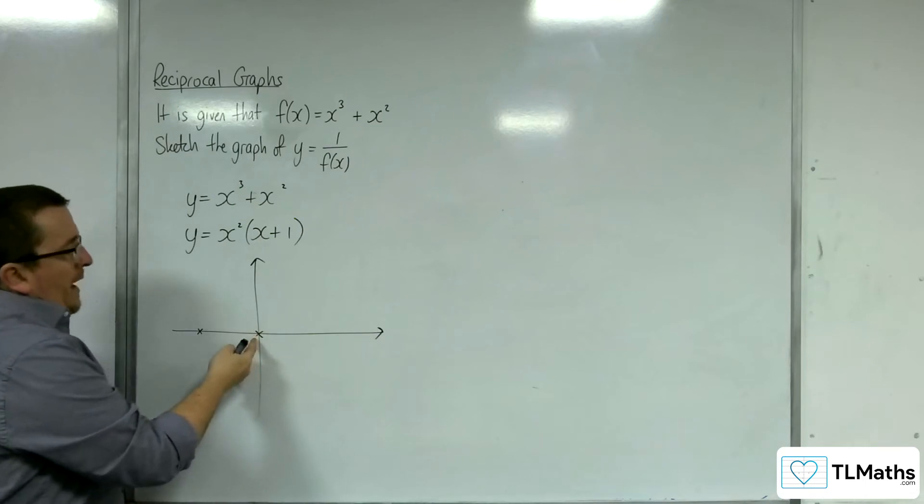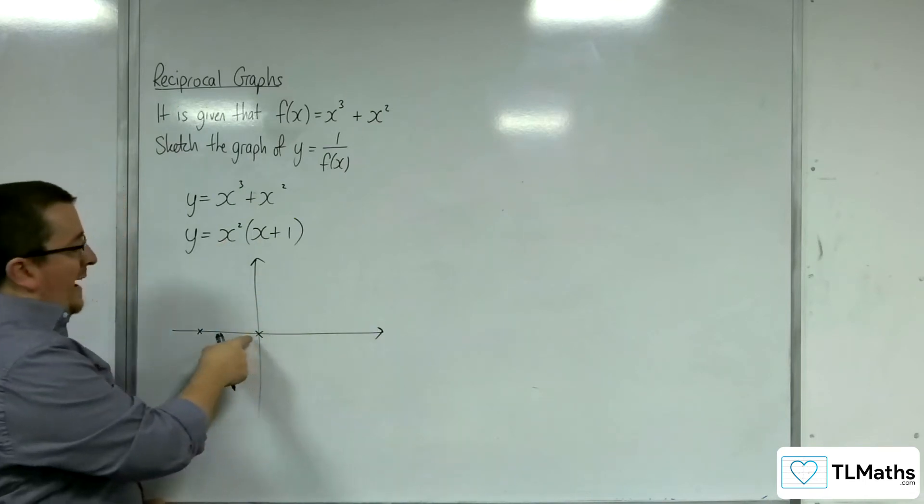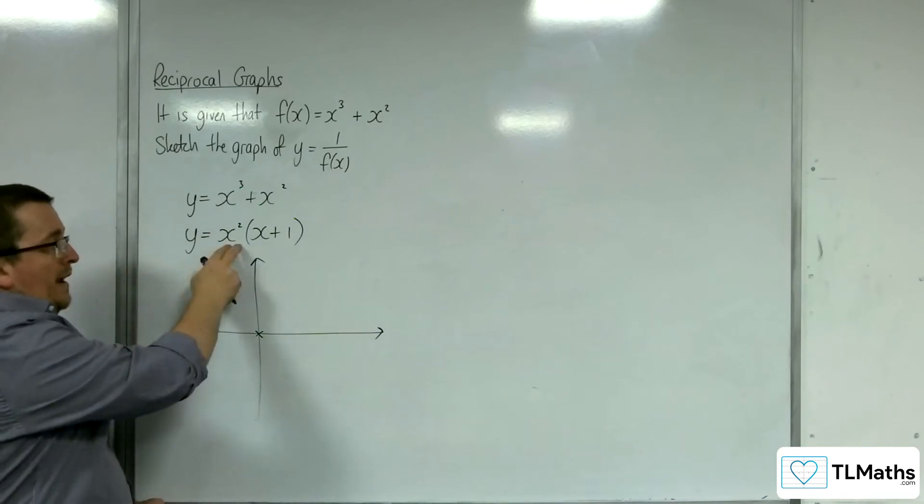And we're going to bounce on the x-axis at x squared. OK, sorry, at x is 0, because we've got the x squared term there.